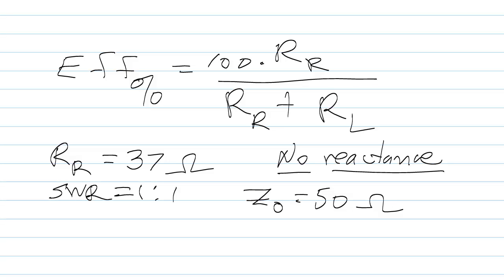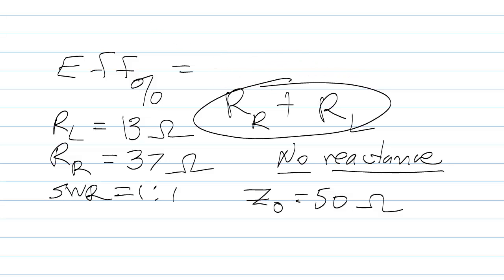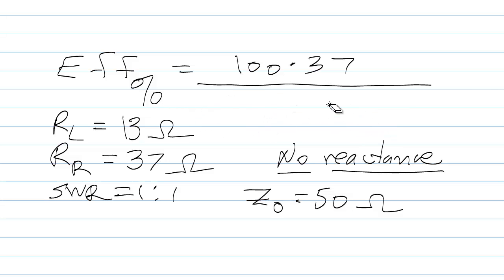When I observe an SWR of one to one, that means that that feed line is seeing a purely resistive load, no reactance, equal to its characteristic impedance, which is 50 ohms. Well, what that means then is that the radiation resistance plus the loss resistance has to equal 50, meaning that the loss resistance here in this case is equal to 13 ohms. So the efficiency of this antenna in this case is 100 times 37, the radiation resistance, divided by the sum of the radiation resistance and the loss resistance.